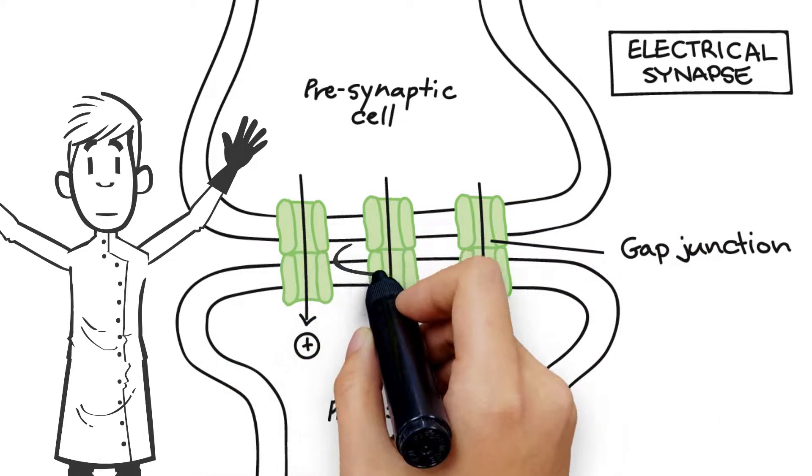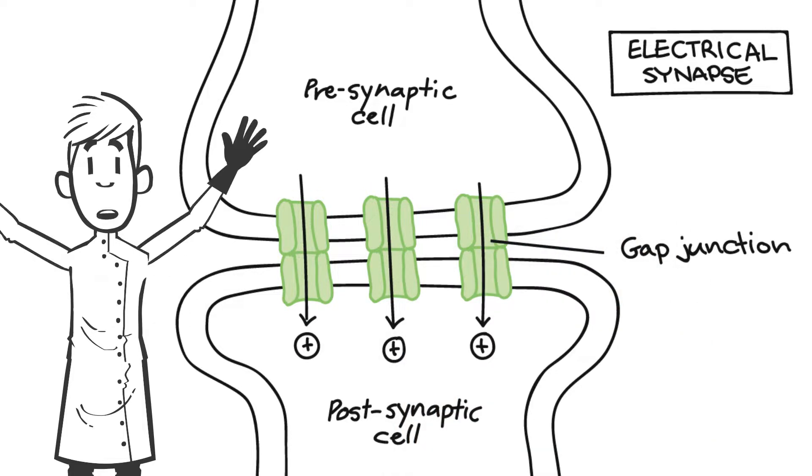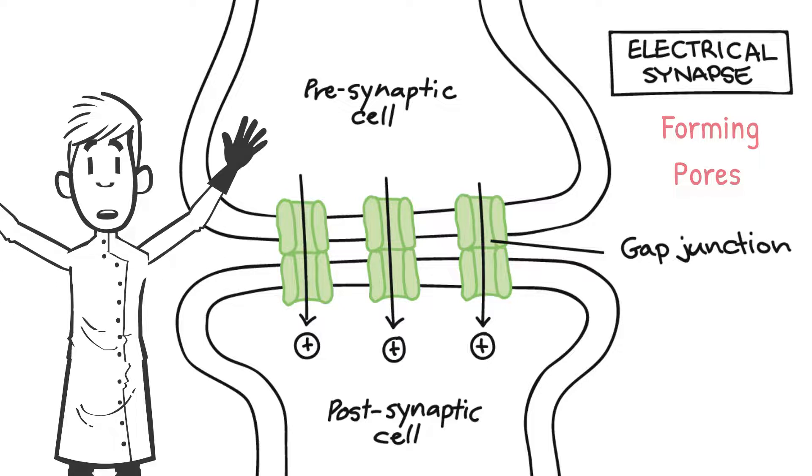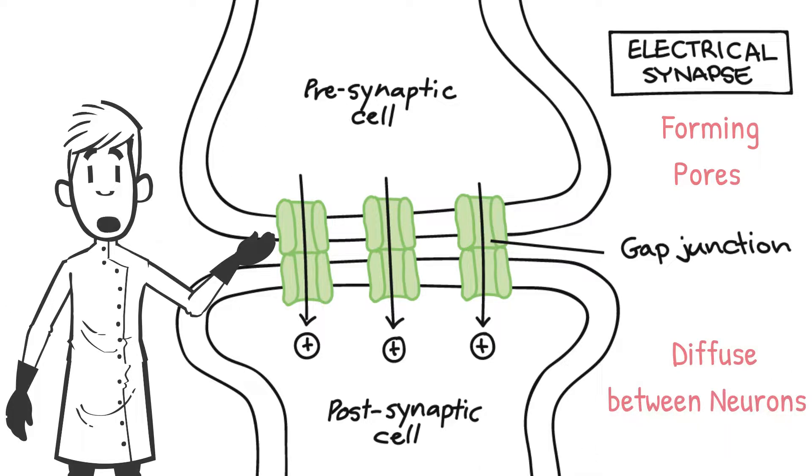Gap junctions contain paired channels in the membranes of both pre-synaptic and post-synaptic neurons, thus forming pores. These pores are larger than the voltage-gated ion channels in chemical synapses, which allow several substances to diffuse between neurons.